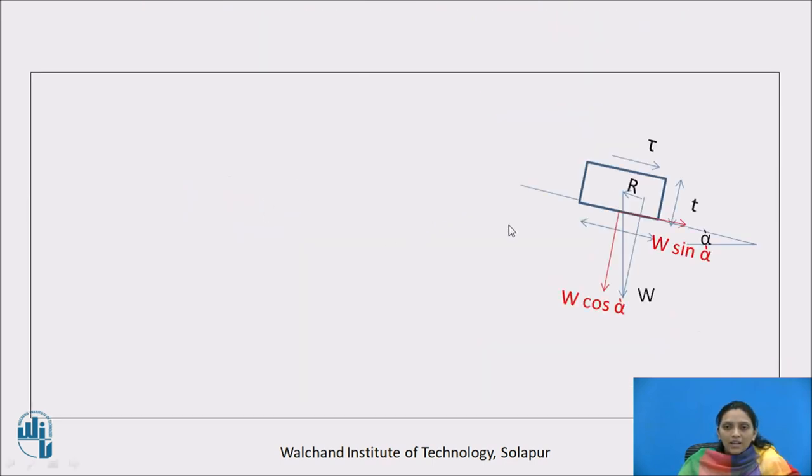In this same diagram shown here, W is acting vertically downward, and the frictional resistance force is acting against the direction of motion. Here, in red color shown the component of W, perpendicular to sewer is W cos alpha, and parallel to sewer line it is W sin alpha.